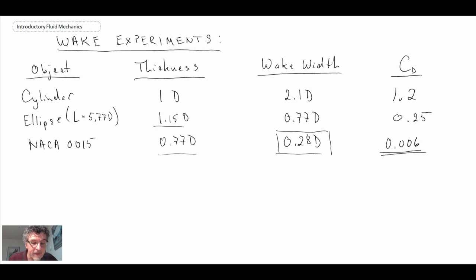Obviously, NACA airfoils have been designed for high lift and low drag. But what this highlights is that the width of the wake does have a fairly big impact upon the drag characteristics. Consequently, streamlining is used in order to reduce the drag on bodies.